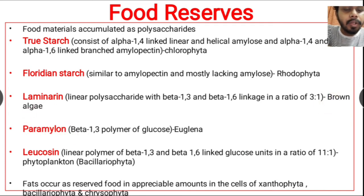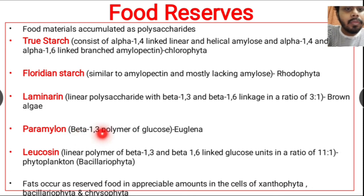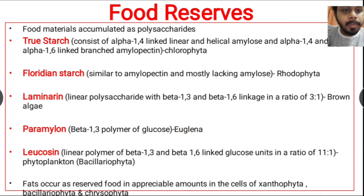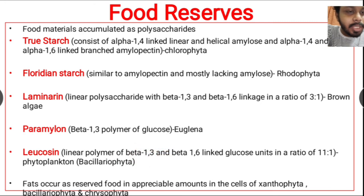Paramylon is another polymer of glucose where the glucose molecules are linked by beta-1,3 linkage, and it is found in Euglena. Leucosin is also a polymer of glucose — it is a linear polymer where the linkage is present at beta-1,3 and beta-1,6 positions of the glucose molecules.